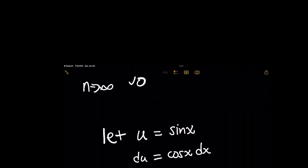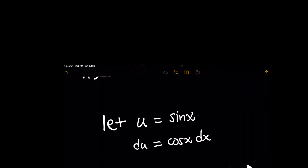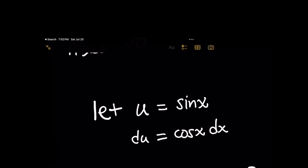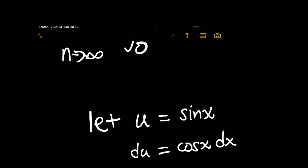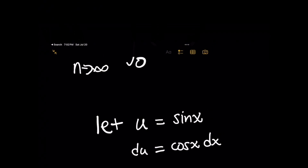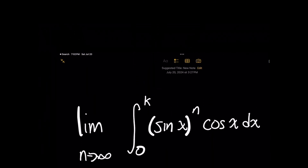If I set u as sine of x, then du is simply going to be cosine of x dx after taking the derivative of both sides. You're going to notice that this becomes a very simple integral that transforms into a polynomial integral.